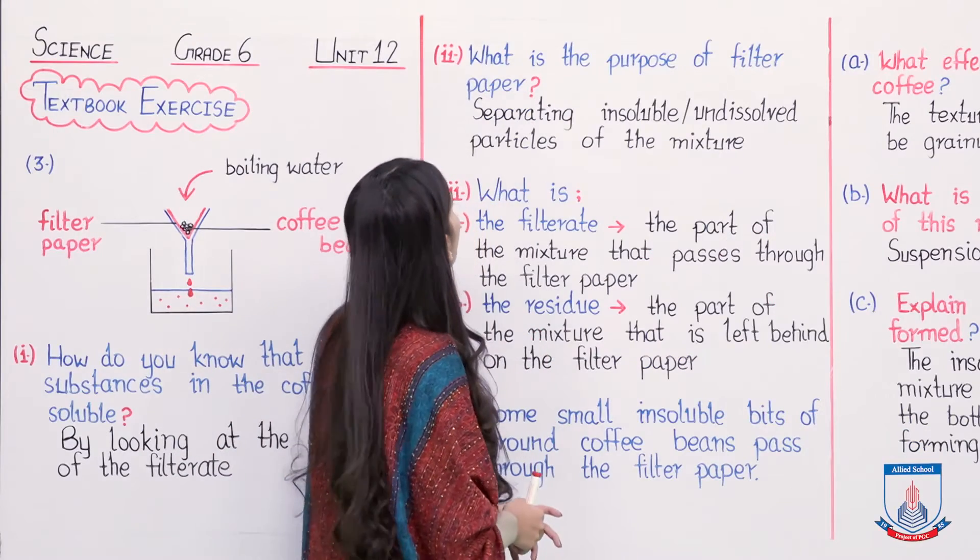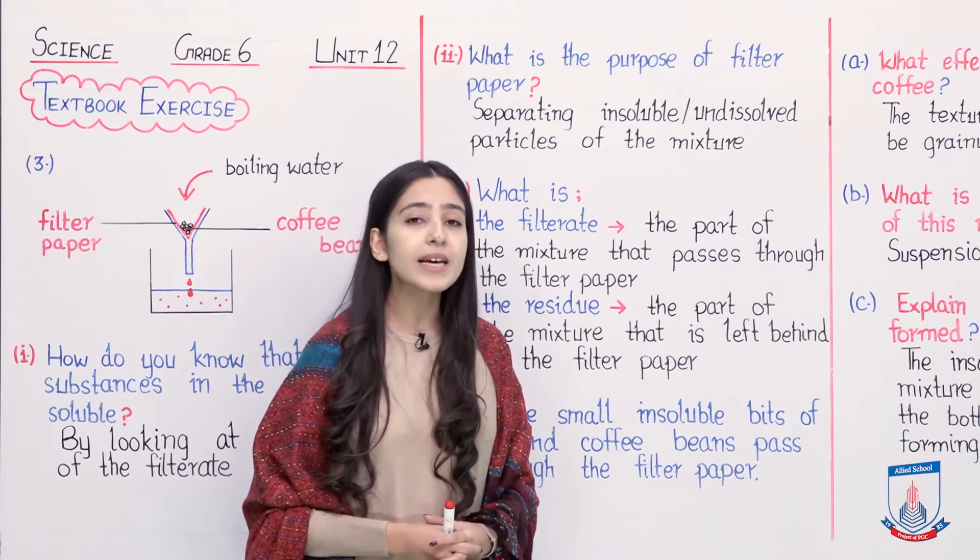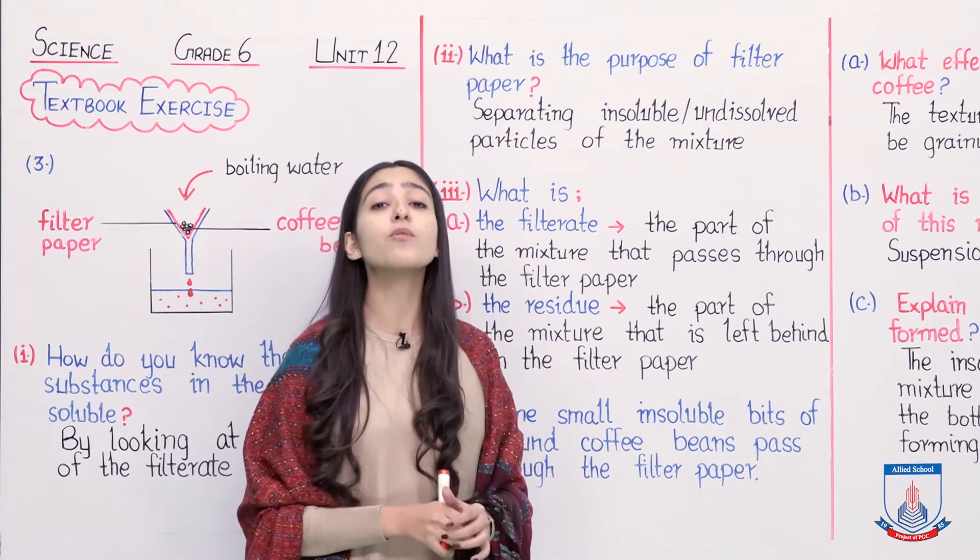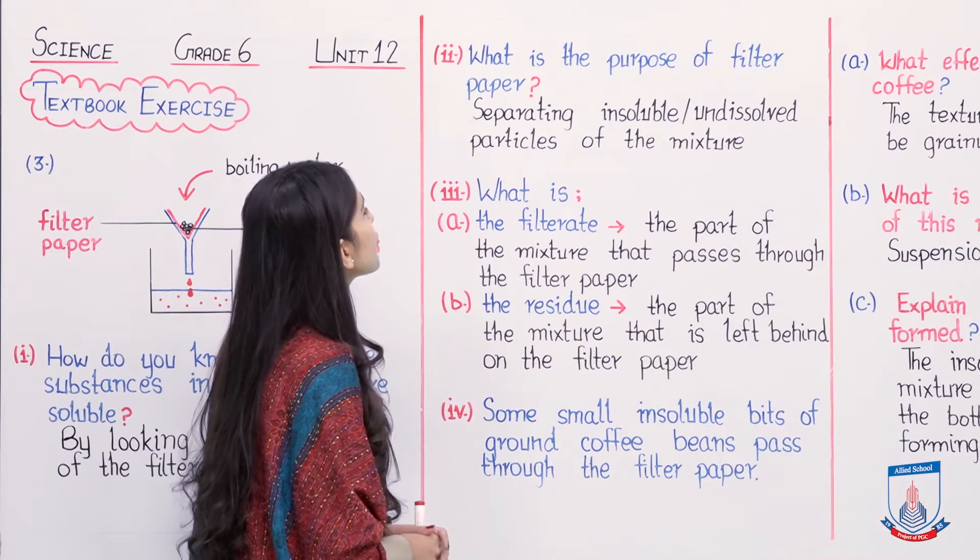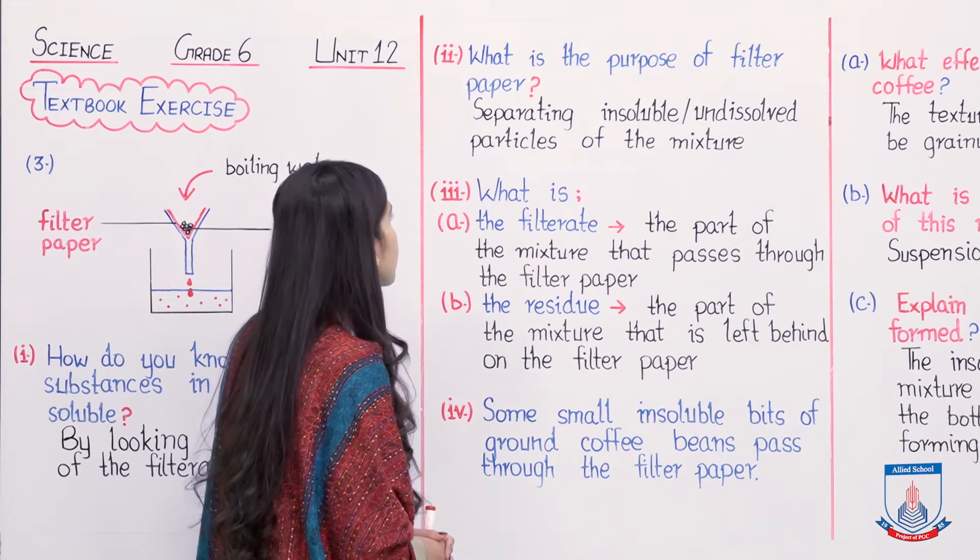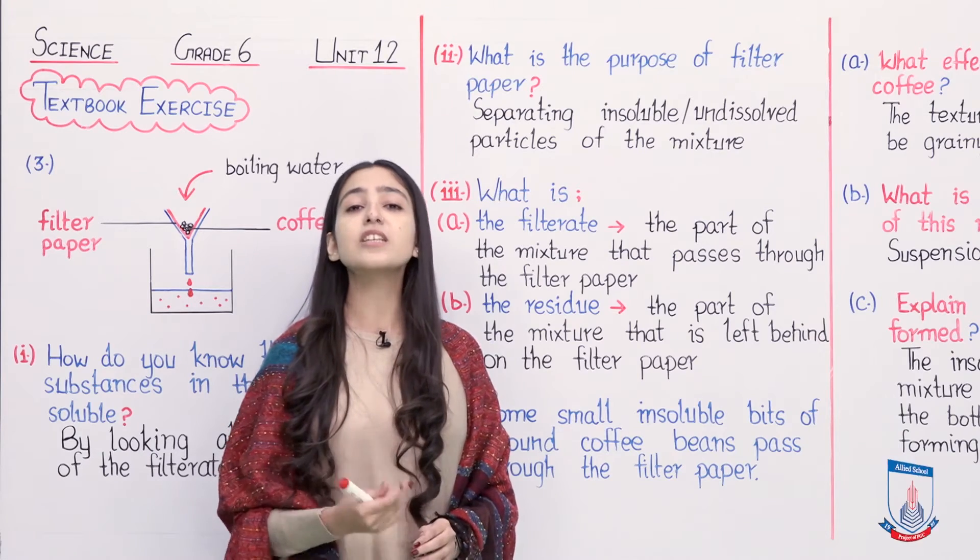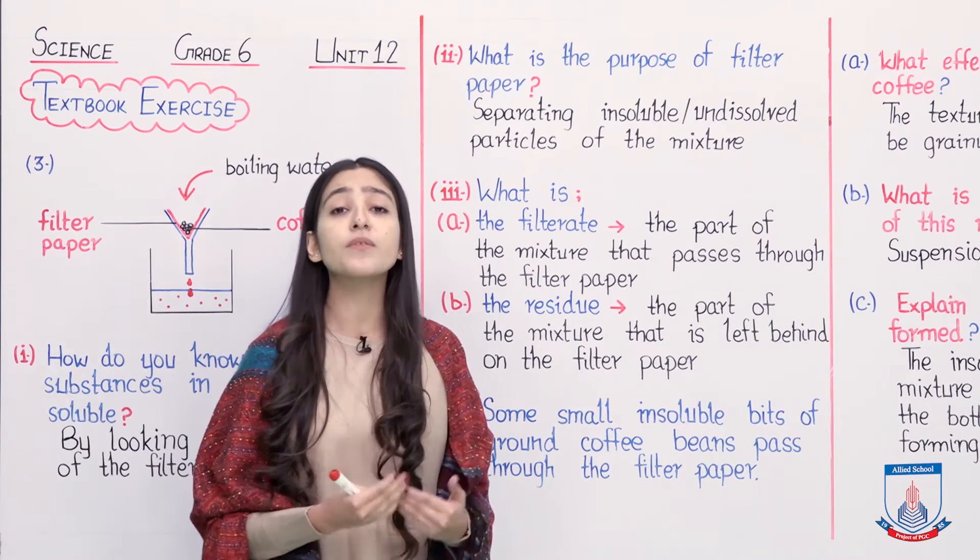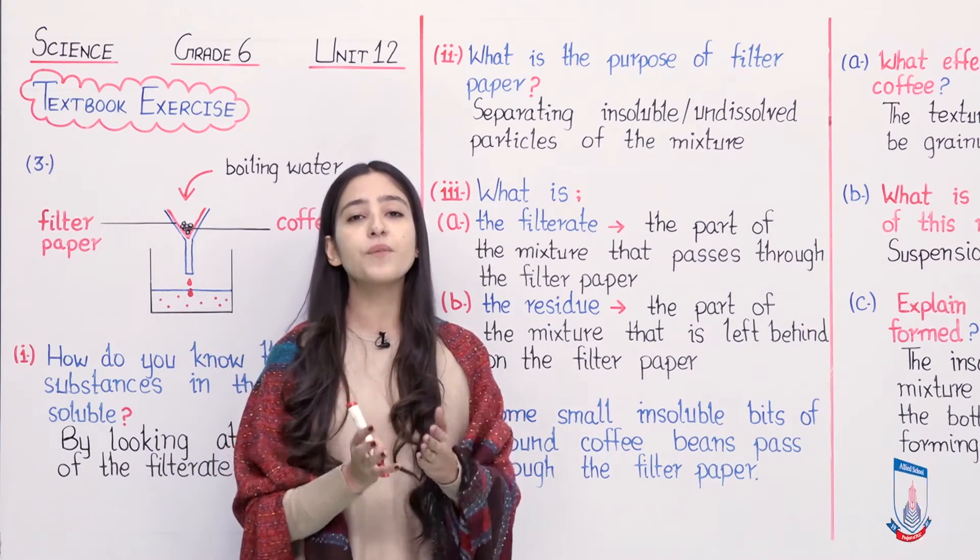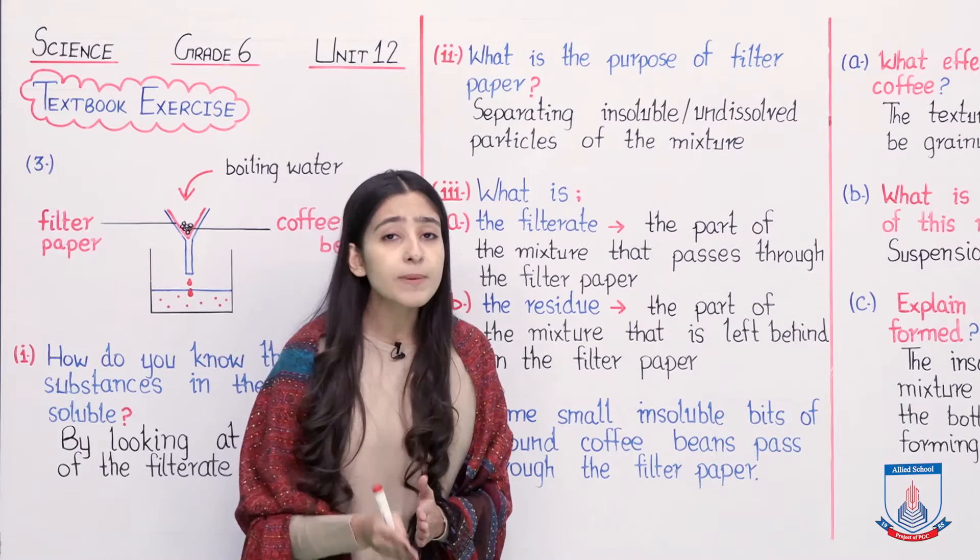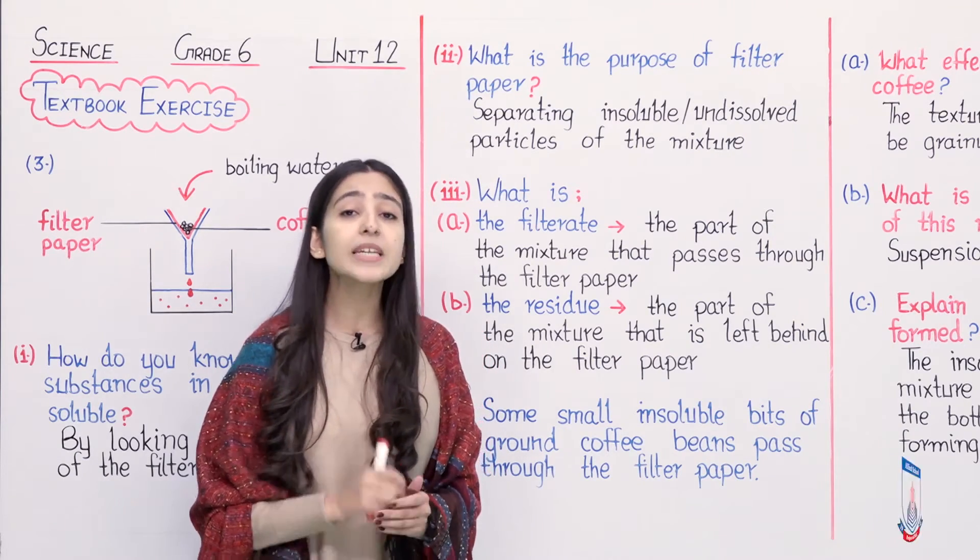In the answer, you will write: by looking at the color of the filtrate. As I told you, the liquid that passes through filter paper is called filtrate. When we see the filtrate color, which has now become brown, we know that there were some soluble particles in the coffee beans.